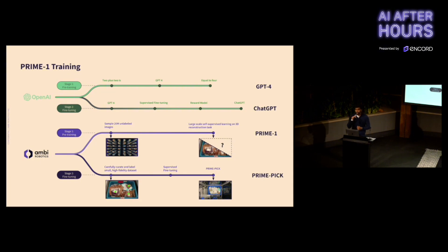Then we have this secondary fine-tuning stage. First, we carefully curate and label a small, high-fidelity data set. This can come from human annotation, synthetic data, or high-resolution sensor readings. Then we run supervised fine-tuning and get a downstream model, in this case, Prime Pick. We can run this same process for other downstream tasks, such as movement and placement.